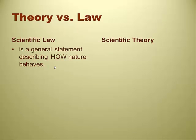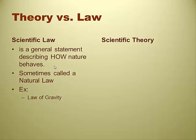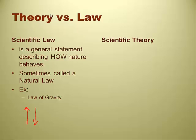Scientific laws are general statements that describe how nature actually behaves — sometimes called natural laws. One example is the law of gravity: what goes up must come down. That is a law — it always happens here on Earth, and if you throw a ball on the moon, it falls back down there too. A scientific law just describes how nature is working.